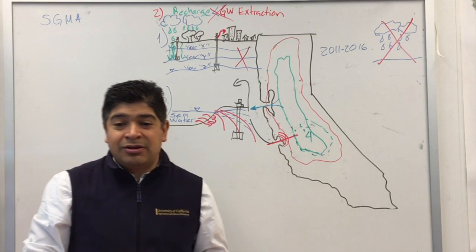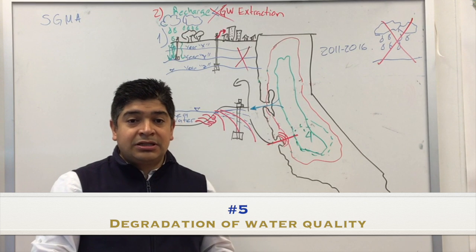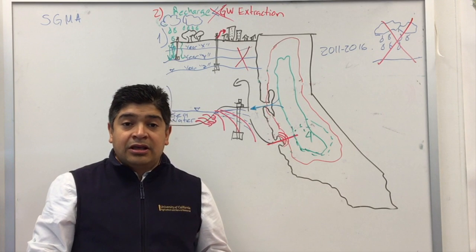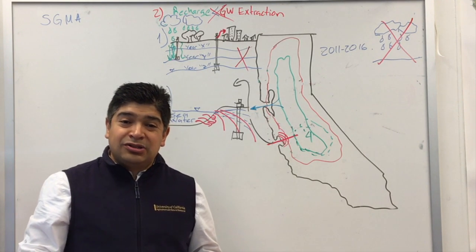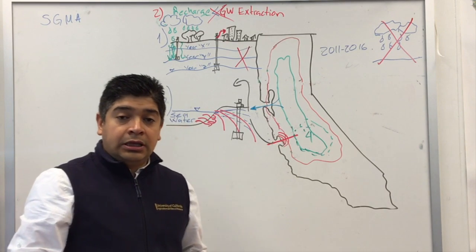Undesirable result number five, degradation of groundwater quality. So basically, what this point number five is talking about is that the water that is recharged has to be clean, so it will not break all the water that is already in the aquifer.